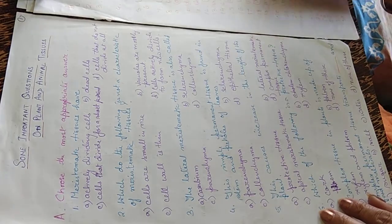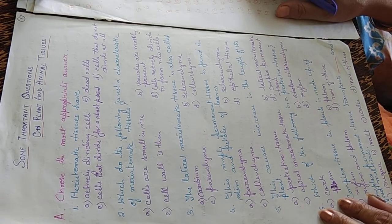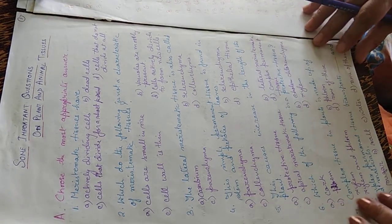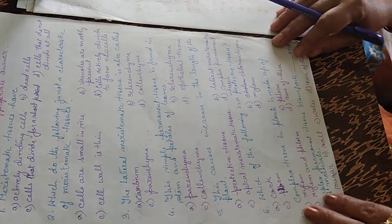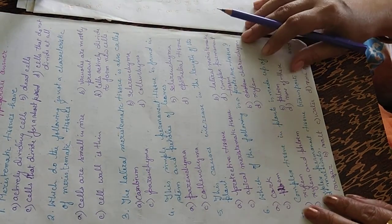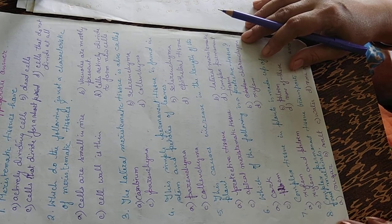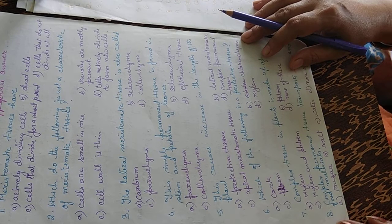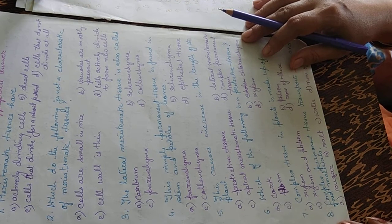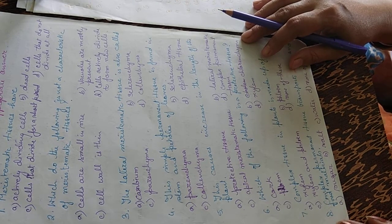The fourth question: which simple permanent tissue is found in the stem and the petioles of the leaves? Options are parenchyma, sclerenchyma, colenchyma, and epithelial tissue. The answer is C — colenchyma, which is thickened at the corners and gives support to the leaves and stems.